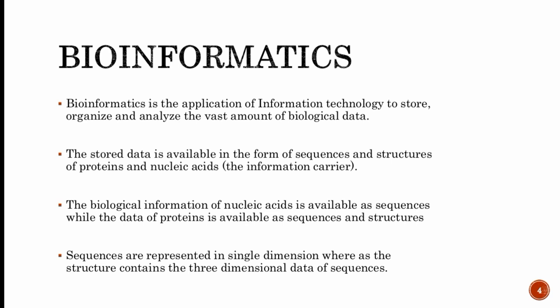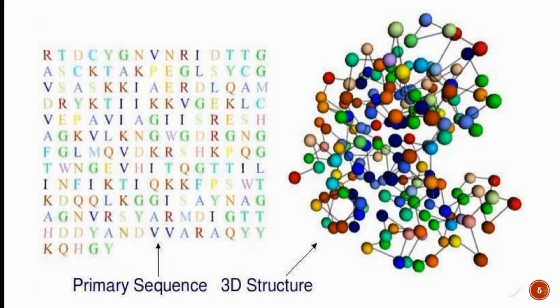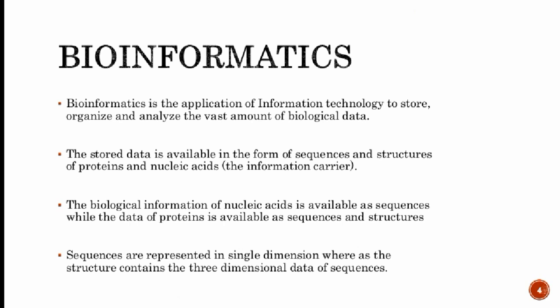The stored biological data is available in two forms: sequences and structures. As you can see in the pictures, sequences appear as primary sequences, and structures appear as 3D structures. You can see in the diagram and find the difference between sequence and structure.